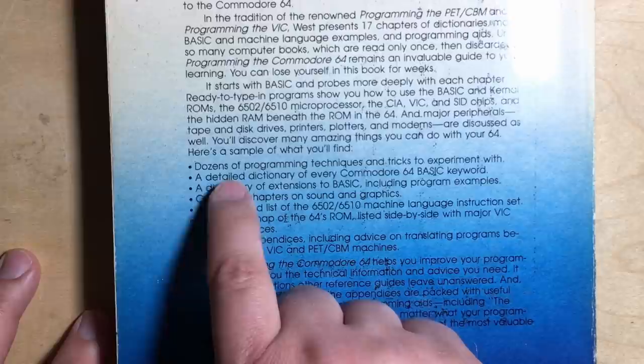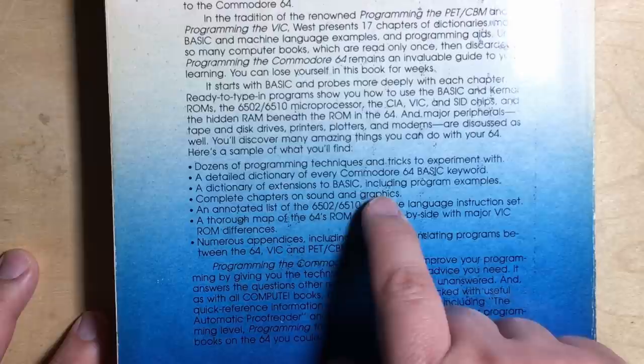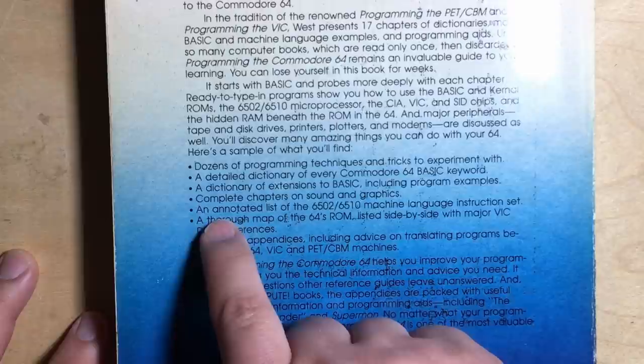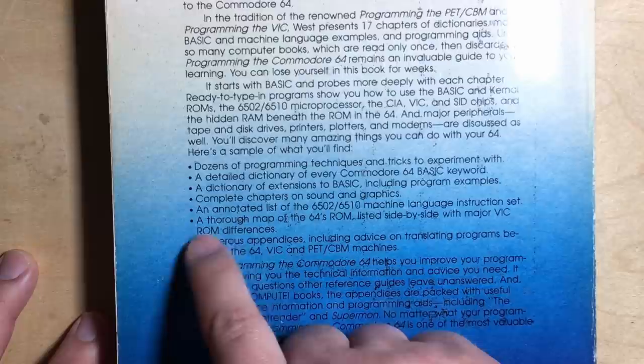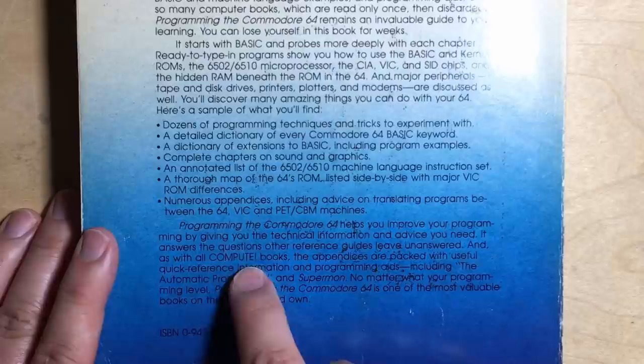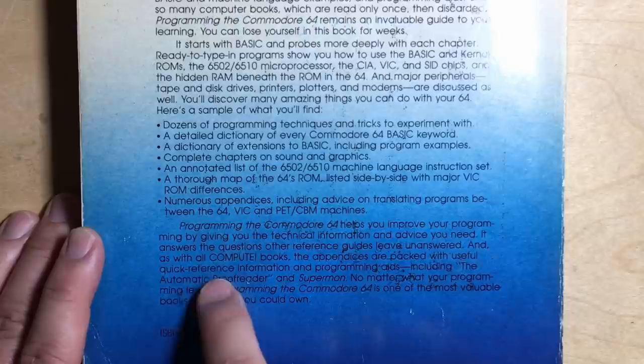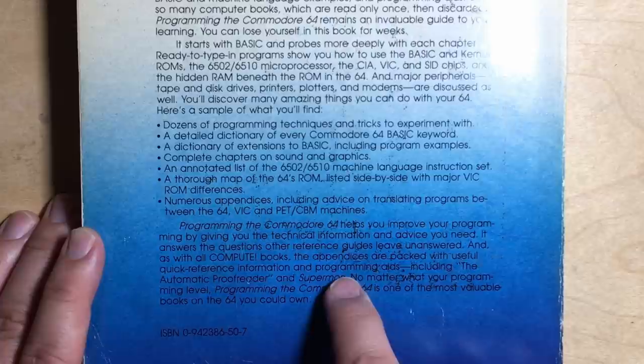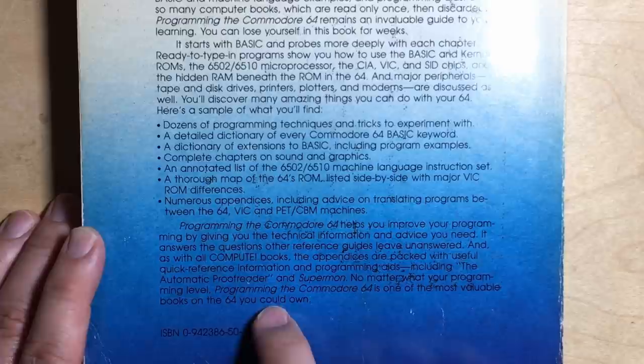Dozens of programming techniques and tricks to experiment with, a detailed dictionary of every Commodore 64 BASIC keyword, a dictionary of extensions to BASIC including program examples, complete chapters on sound and graphics, an annotated list of the 6502-6510 machine language instruction set, a thorough map of the 64's ROM listed side by side with major VIC-20 ROM differences, numerous appendices including advice on translating programs between the 64, VIC, and PET-CBM machines.